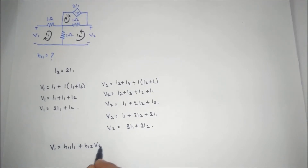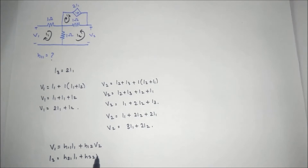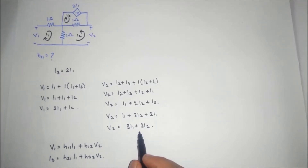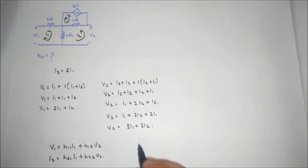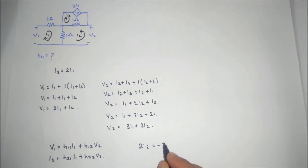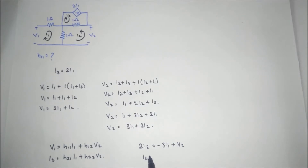The H-parameter formulas are: V1 equals H11·I1 plus H12·V2, and I2 equals H21·I1 plus H22·V2. Using the equation V2 equals 3I1 plus 2I2, we can rearrange to get 2I2 equals minus 3I1 plus (1/2)V2, so I2 equals minus(3/2)I1 plus (1/2)V2.